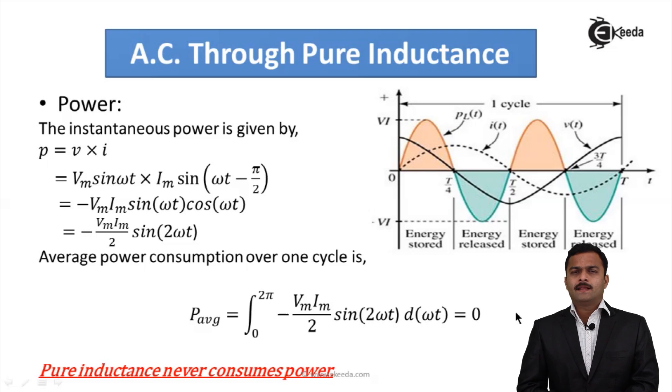Average of this power over a complete cycle is 0. So what conclusion we can draw is whenever you are giving an AC supply to a pure inductor, inductor never consumes power. Power taken by inductor is always 0. But remember, this concept we are learning with respect to pure inductor. Thank you.